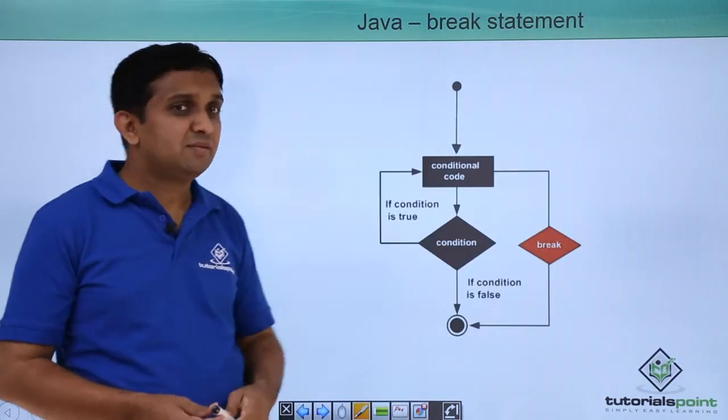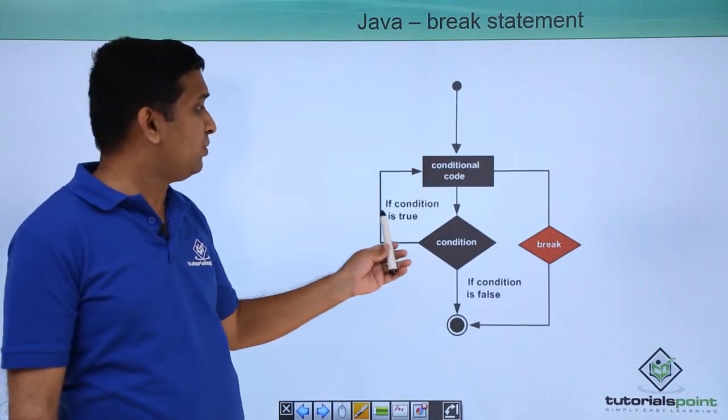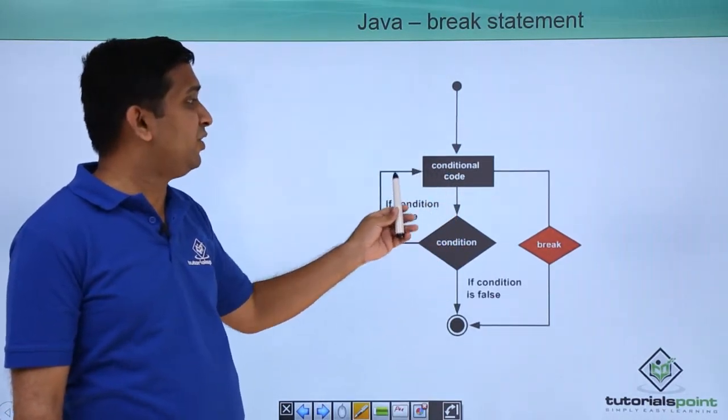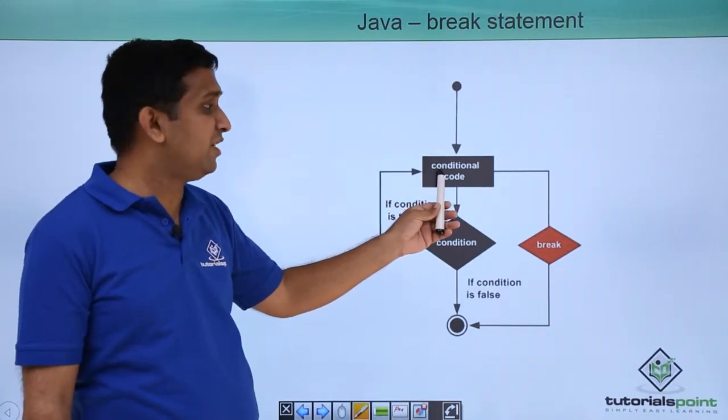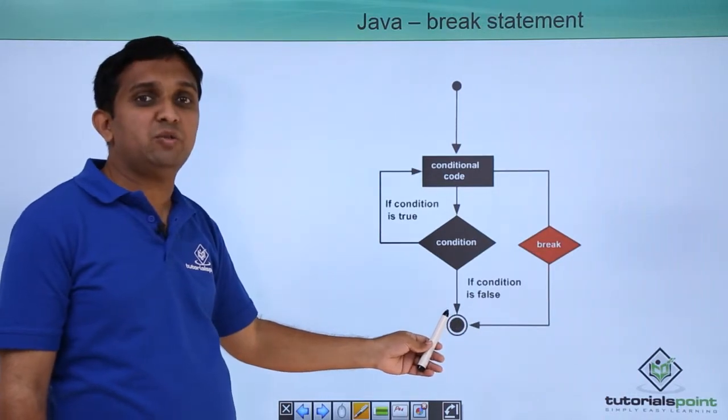The flowchart is shown here where condition is checked. If condition is true, the execution will resume for that loop, and during the execution, on certain condition, if break keyword occurs, then it will directly come out of that loop.